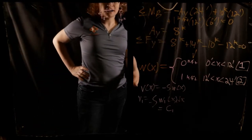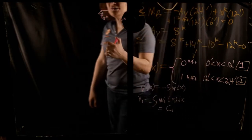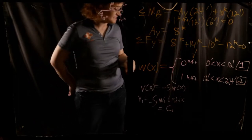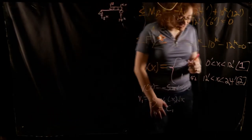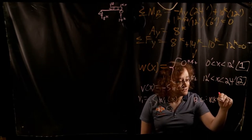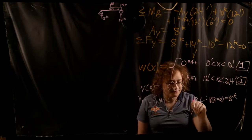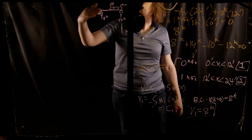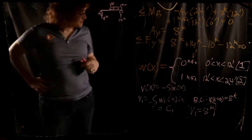I need to find that constant. My boundary condition for the first portion is that the shear at x equals 0 must equal positive 8 kips, because that's the reaction at A. Substituting in, there's no x term, so C1,1 just equals 8. Therefore V1 is simply a constant positive 8 kips throughout the first zone.